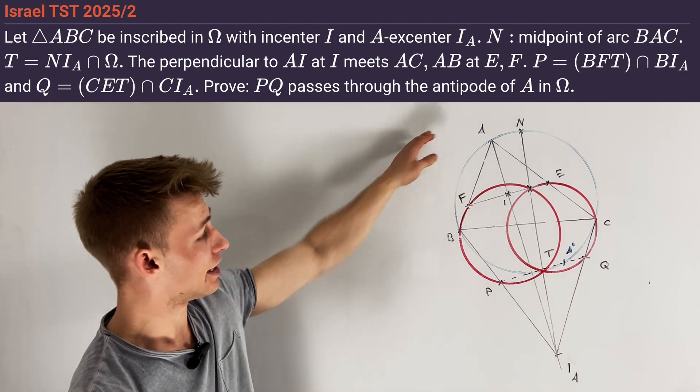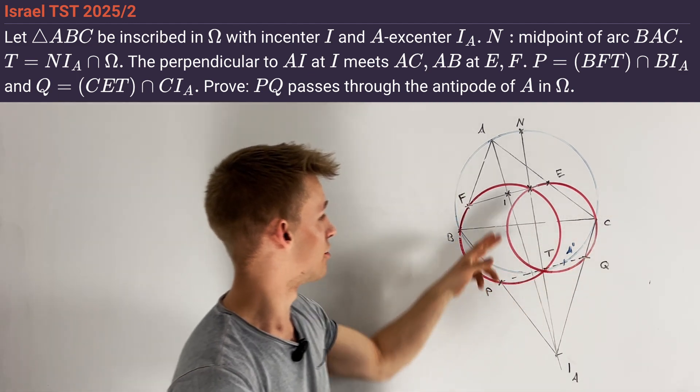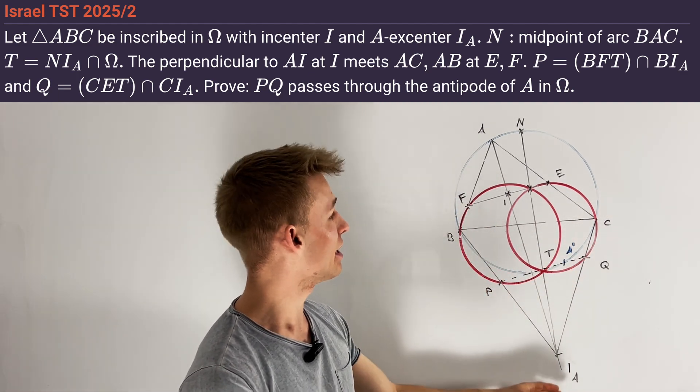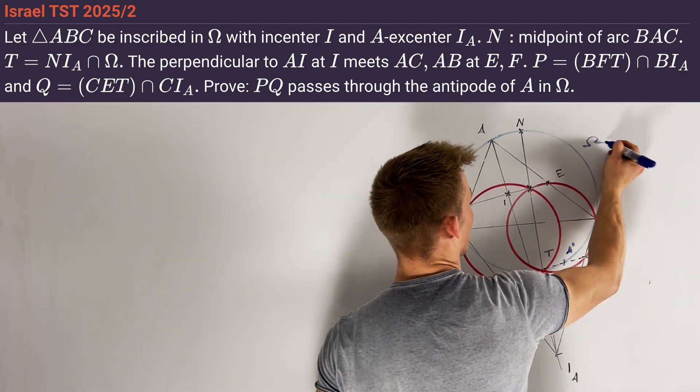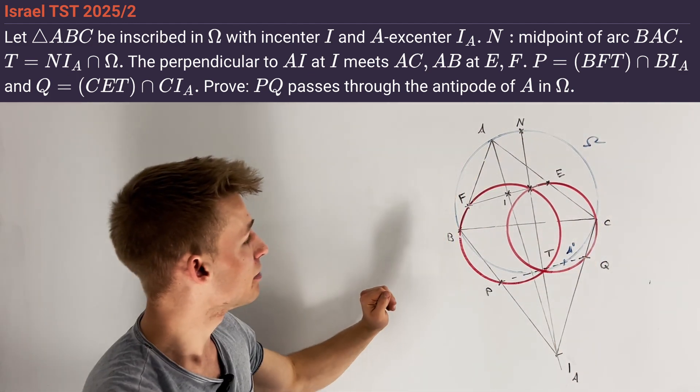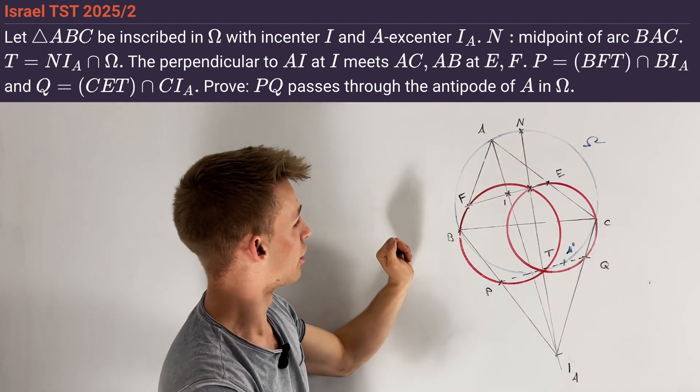We have given a triangle ABC with in-center I and ex-center I_A opposite to vertex A. Point N is defined on the circumcircle Ω of triangle ABC such that N is the midpoint of the arc BC containing also the point A.